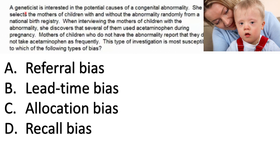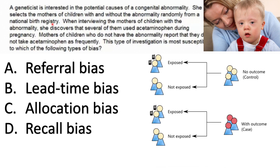First question: a geneticist is interested in the potential causes of congenital abnormality. She selects mothers of children with and without the abnormality randomly from a national birth registry. If you choose by outcome, then you're doing a case-control study — that's essentially what she was doing. When interviewing the mothers of children with the abnormality, she discovers that several of them used acetaminophen during pregnancy.